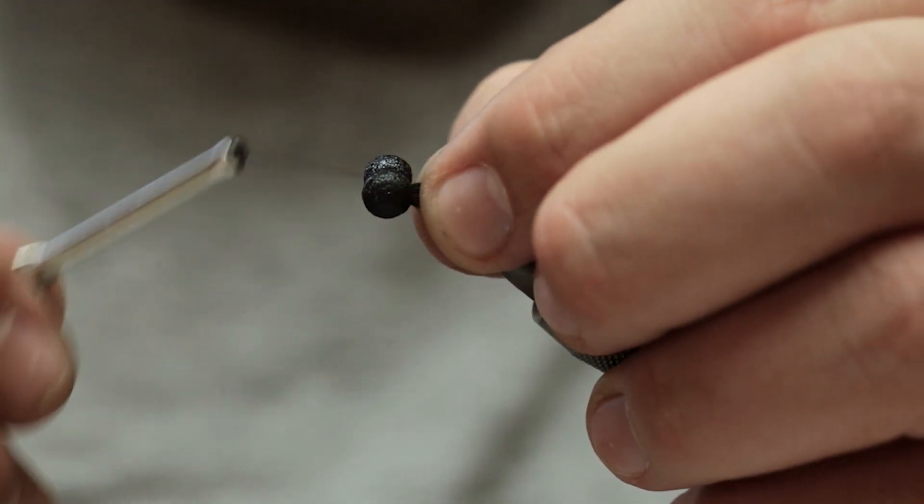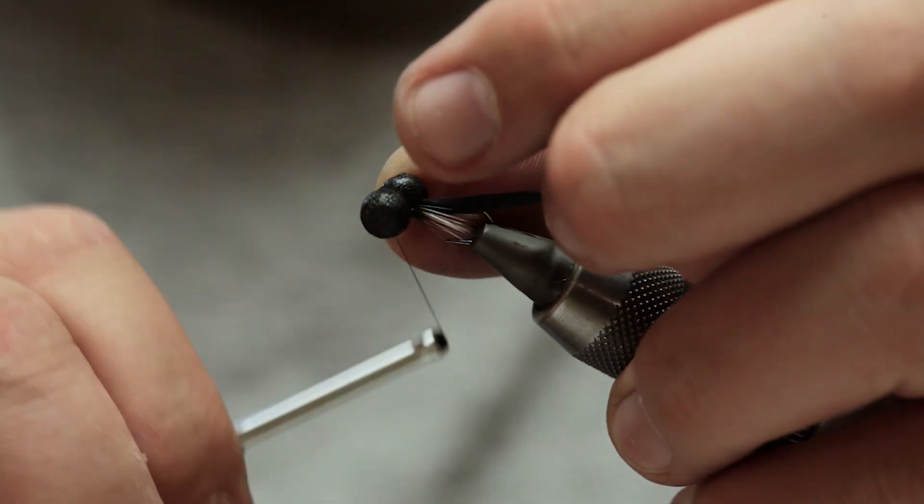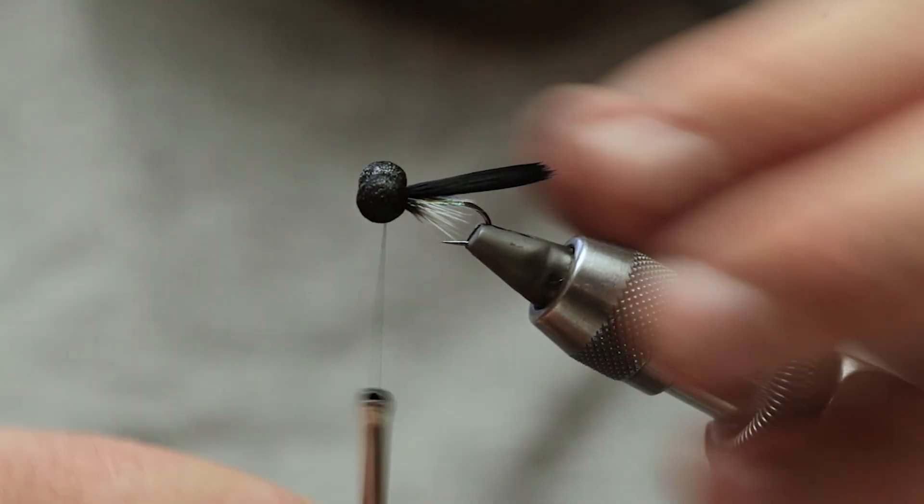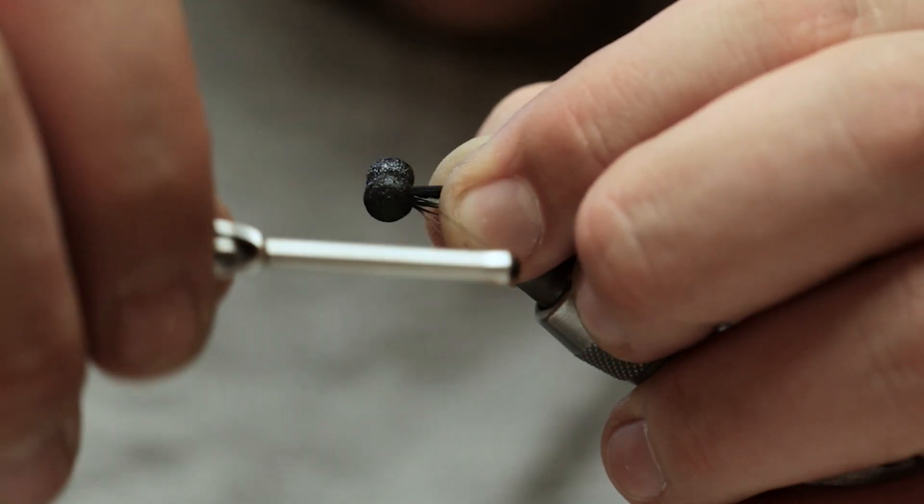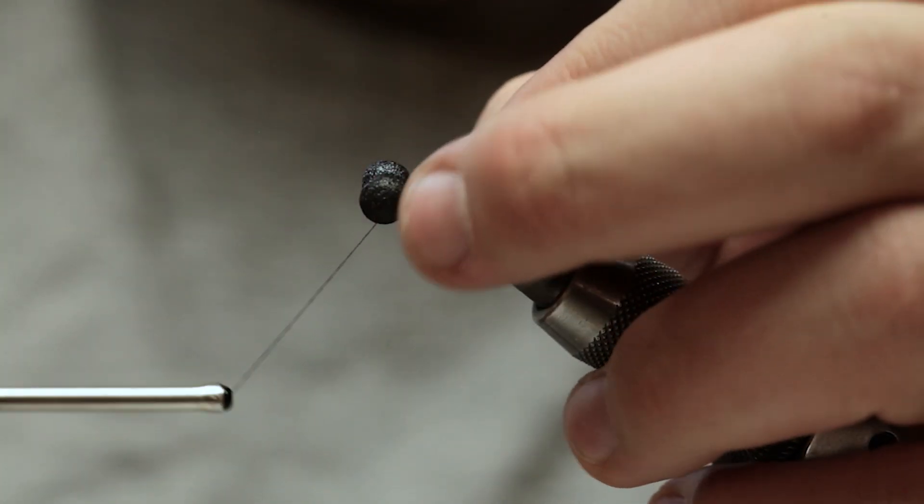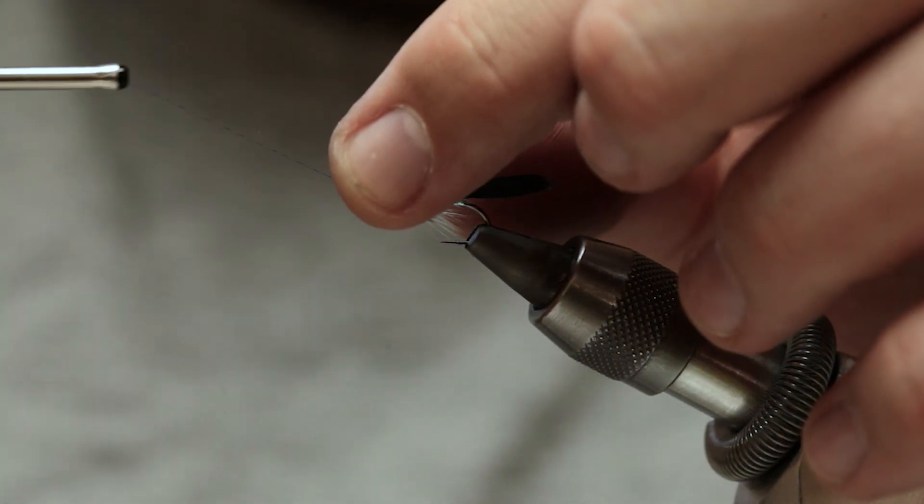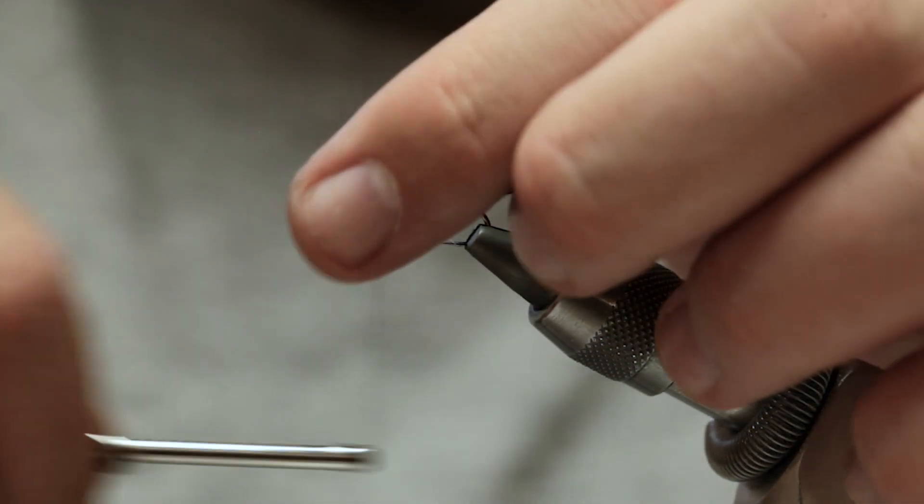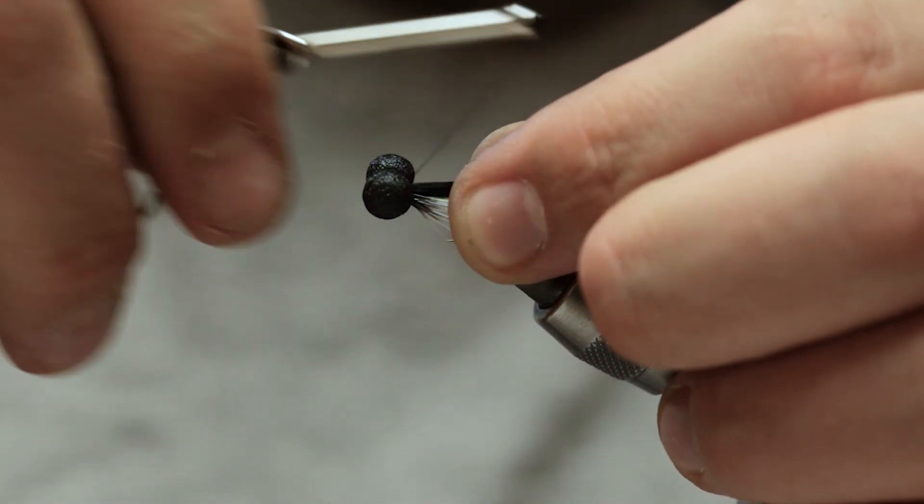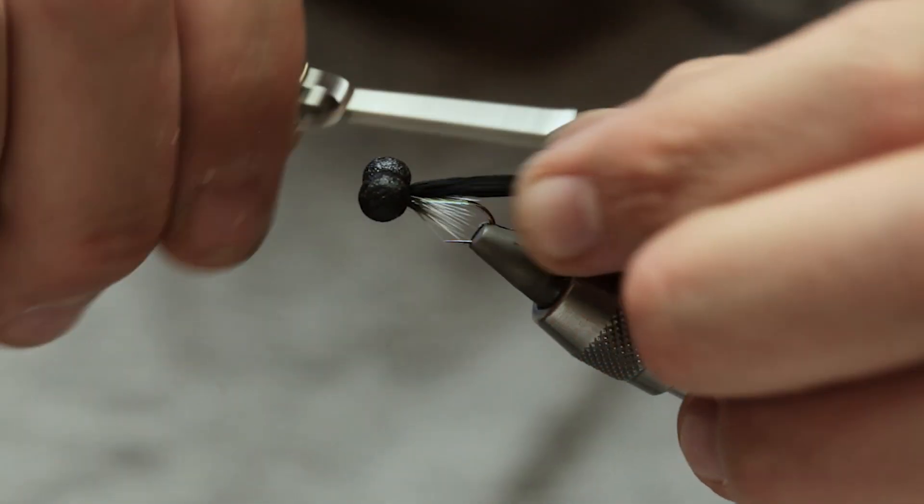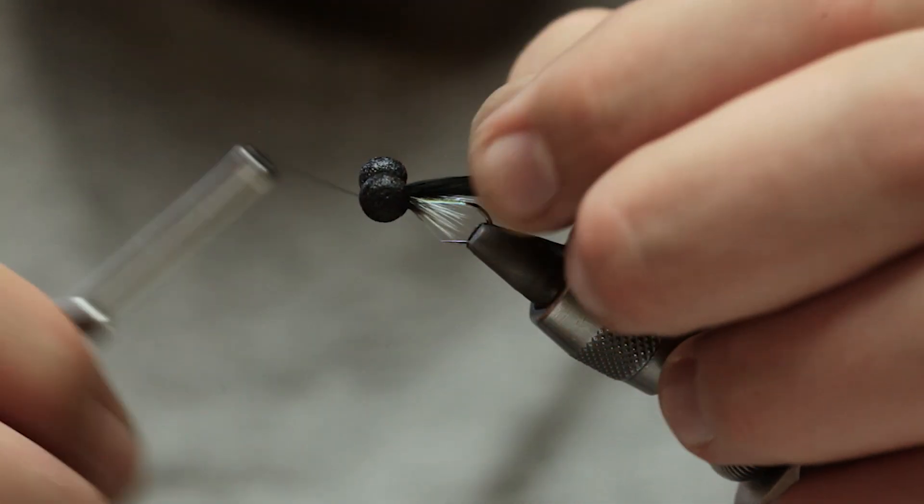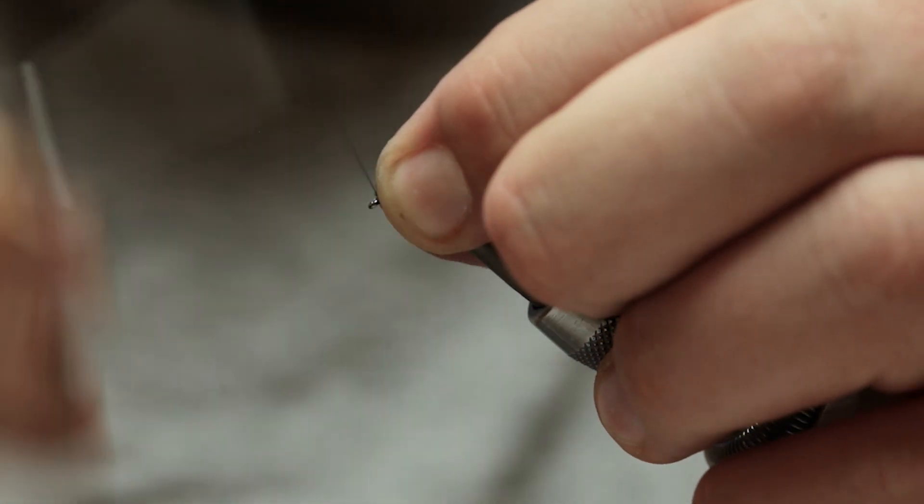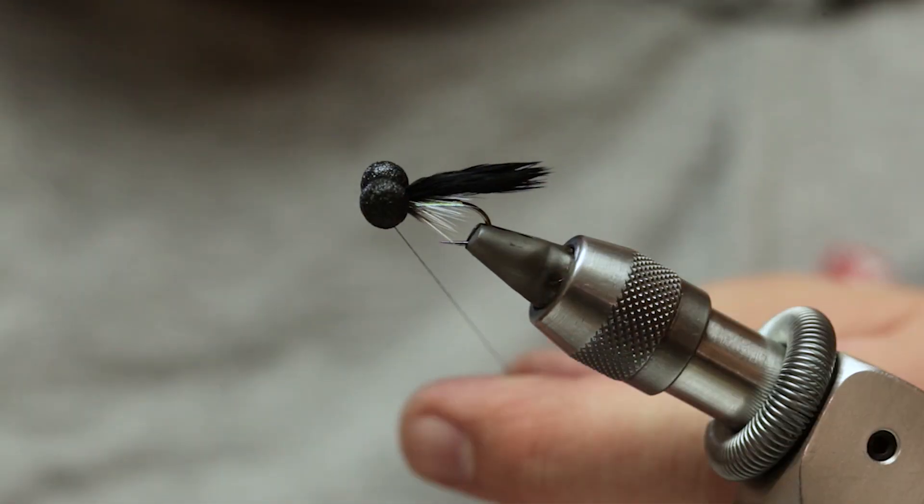Don't worry if they're not being straight at this point, we'll sort that out in a second. Right. Now at this point here, what I do is I come over the top of the shank, underneath the foam eye, over the top of the eye of the hook, under the foam, over the top. And if you pull, that tightens the eyes to the shank. One last figure of eight, and then you pull back the eyes, a couple of turns in front of the eyes, and then whip finish.